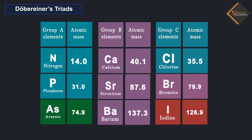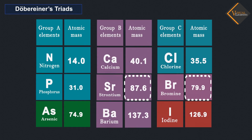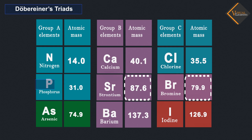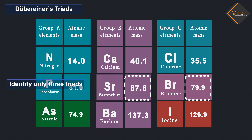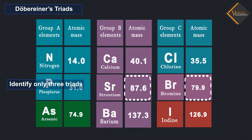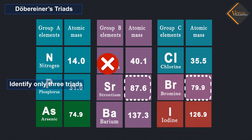You will find that groups B and C form Dobereiner Triads. Dobereiner could identify only three triads from the elements known at that time. Hence, this system of classification into triads was not found to be useful.